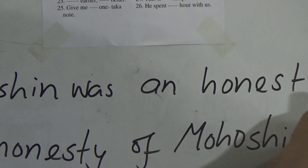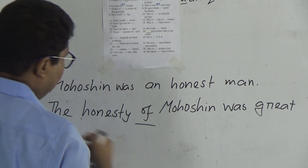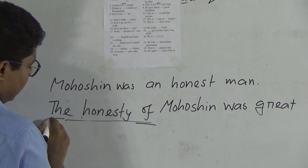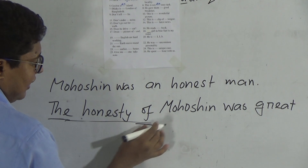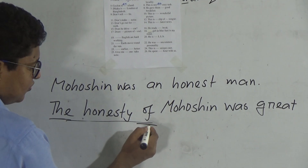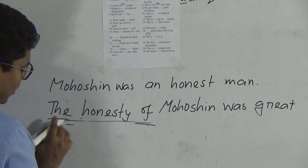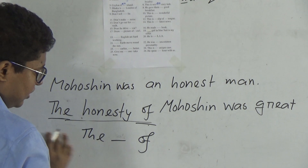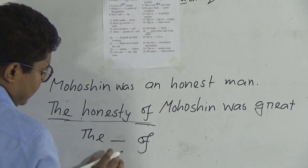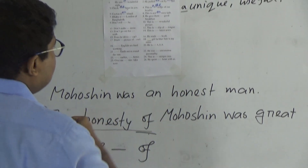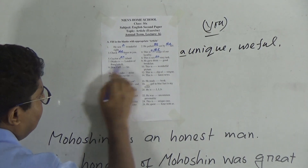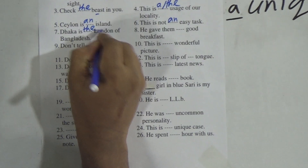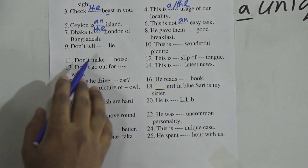Moshin was an honest man. But if we find any specific quality — the honesty of Moshin is one quality of a person — we use 'the'. So before 'of', if you find any adjective or any word, we use 'the'. Always remember: the ___ of. So Dhaka is the London of Bangladesh — Dhaka is being compared with London.